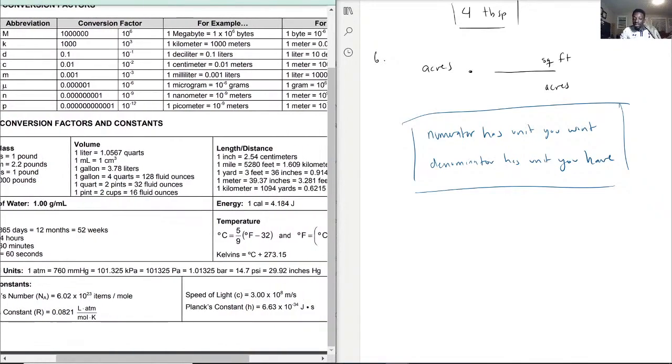Whatever your conversion factor says, just make sure you put it in the right spot. If they say one square foot is equal to three acres, for example, you put one here and three here. That is what you do.